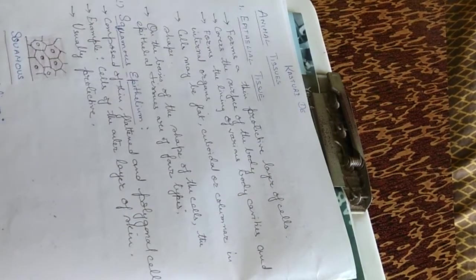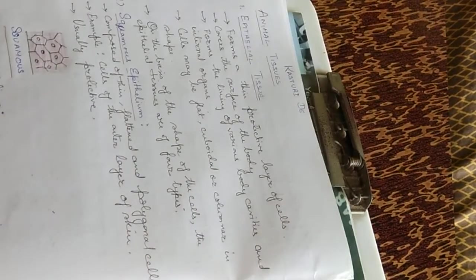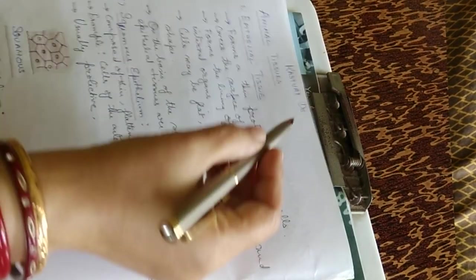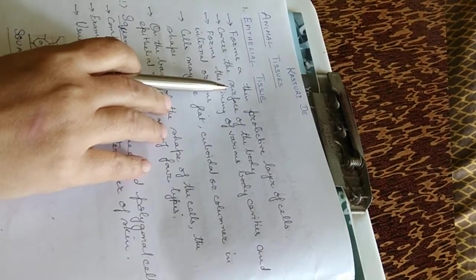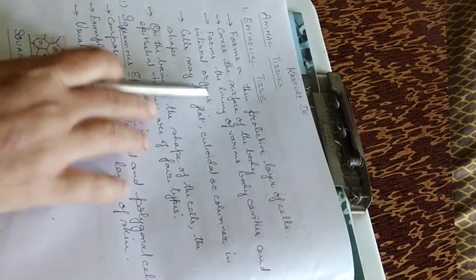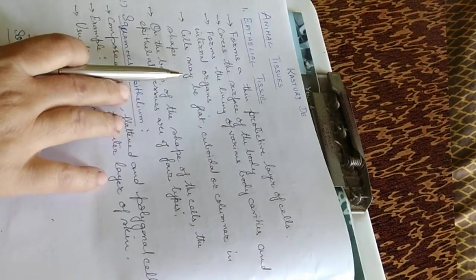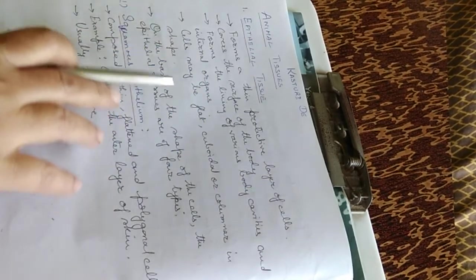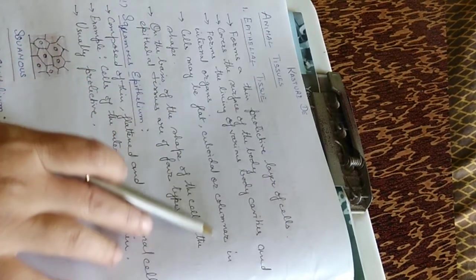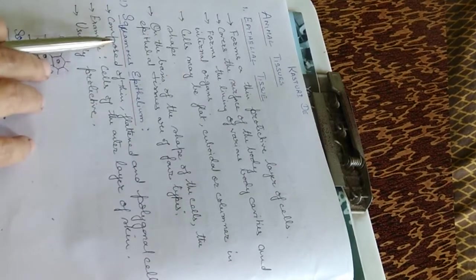Animal tissues are of different types. The first is epithelial tissue. Epithelial tissue forms a thin protective layer of cells. It covers the surface of the body and forms the lining of various body cavities and internal organs. Cells may be flat, cuboidal, or columnar in shape. On the basis of the shape of the cells, the epithelial tissues are of four types: squamous epithelium, cuboidal epithelium, columnar, and ciliated epithelium.